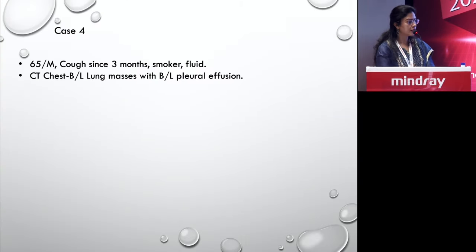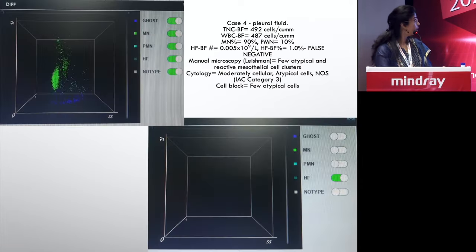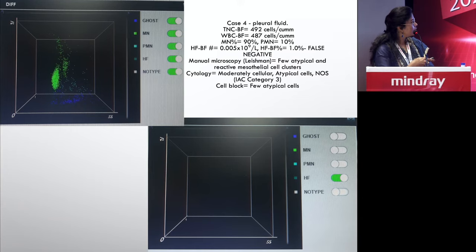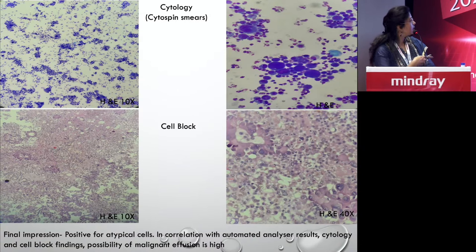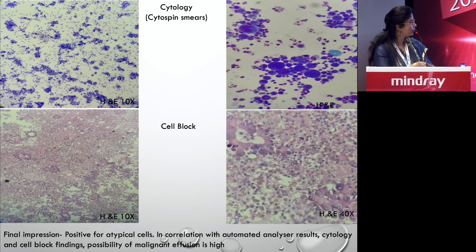Case four is a 65-year-old male, a smoker with cough, whose CT showed a lung mass with bilateral pleural effusion. The total count was 492, WBC body fluid analysis revealed 487, and in the high fluorescent area there were only around 5 cells. This was a false negative because the cell block showed few atypical cells. The cytospin smears showed some atypical cells, but the machine did not pick them up in the high fluorescent area, and cell block proved this was cancer.